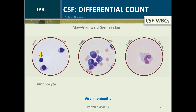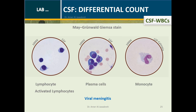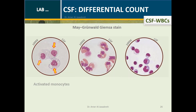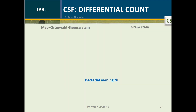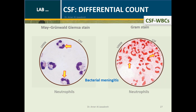CSF Differential Count findings: Viral meningitis is evidenced by the presence of lymphocytes, plasma cells, and monocytes. Activated monocytes may also be seen. Eosinophilic meningitis indicates parasitic infection, with lymphocytes and plasma cells present. Bacterial meningitis: comparison between May-Grünwald-Giemsa stain and gram stain shows neutrophils and intracellular bacteria demonstrated in both stains.